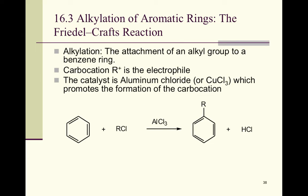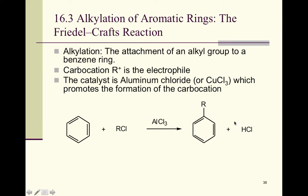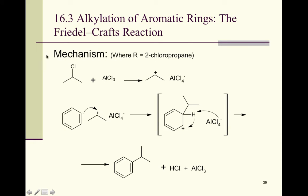Alkylation of aromatic rings — putting more carbons on carbon — is pretty much the whole goal of Friedel-Crafts reactions. In alkylation, we attach an alkyl group such as methyl, ethyl, or propyl to the benzene ring. The carbocation is the electrophile, and the catalyst is aluminum chloride or copper chloride; aluminum chloride is the classic Friedel-Crafts catalyst. We use an alkyl chloride where the chloride is the leaving group and its attachment point becomes where it connects to the benzene ring, with HCl as the minor secondary product.